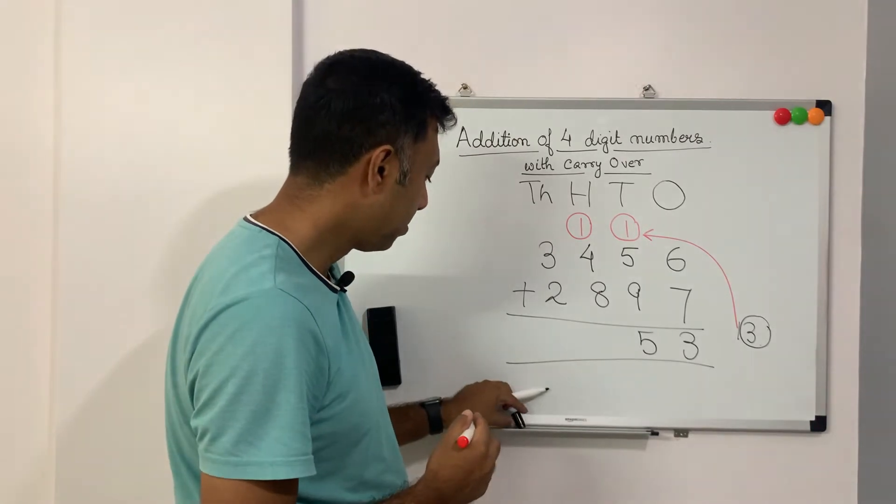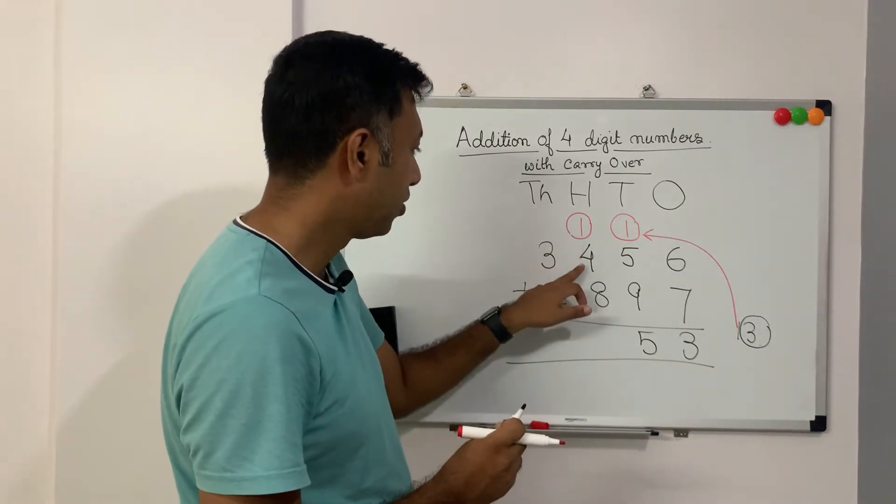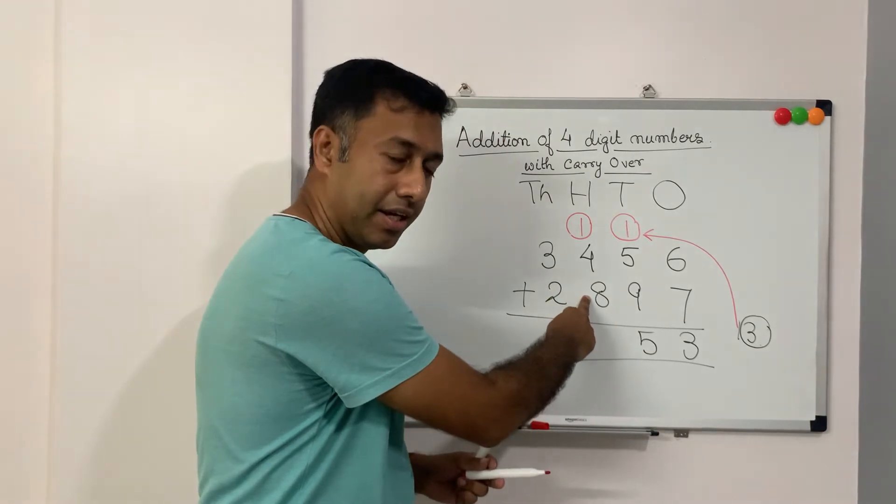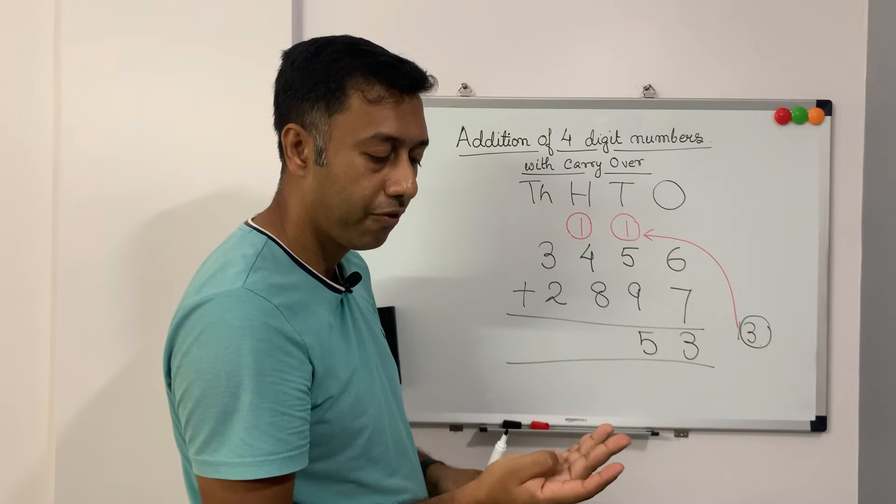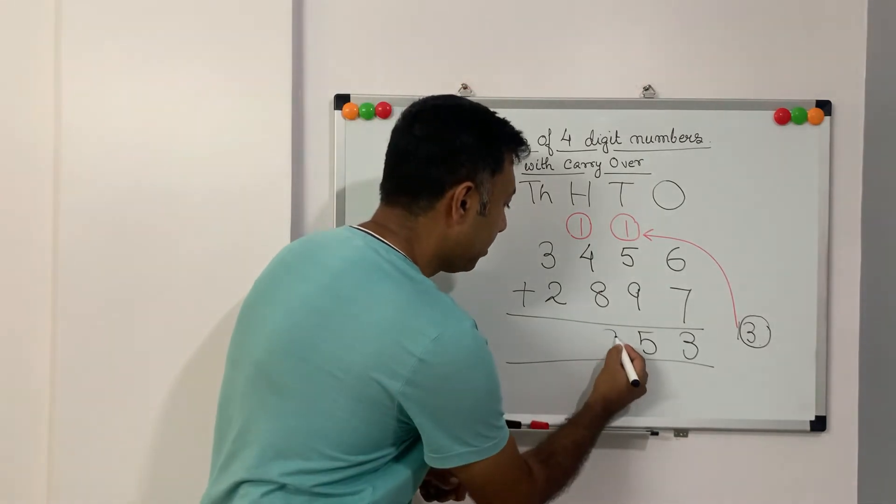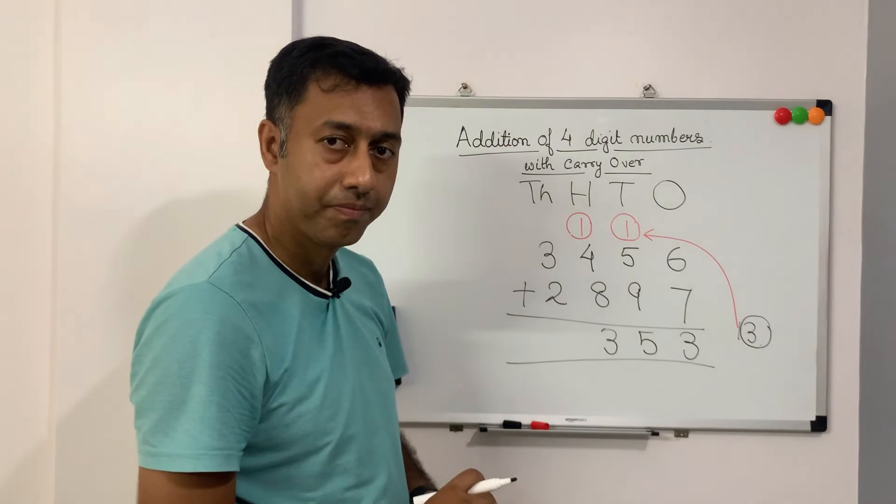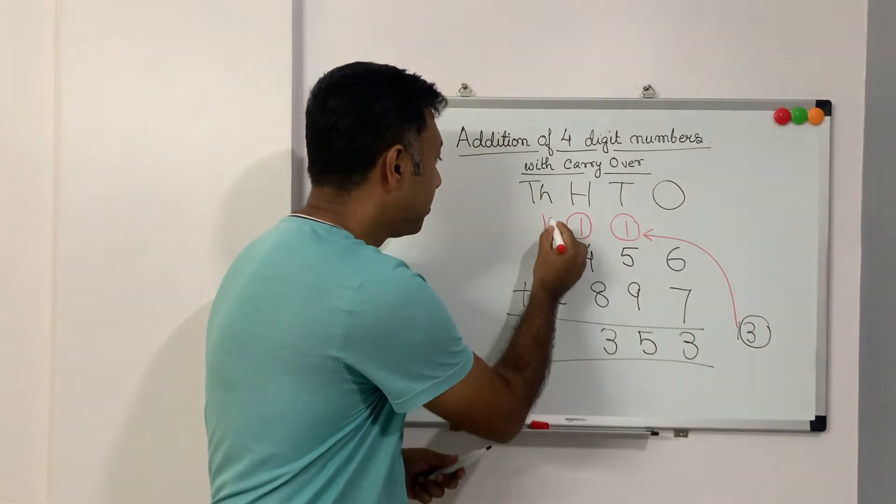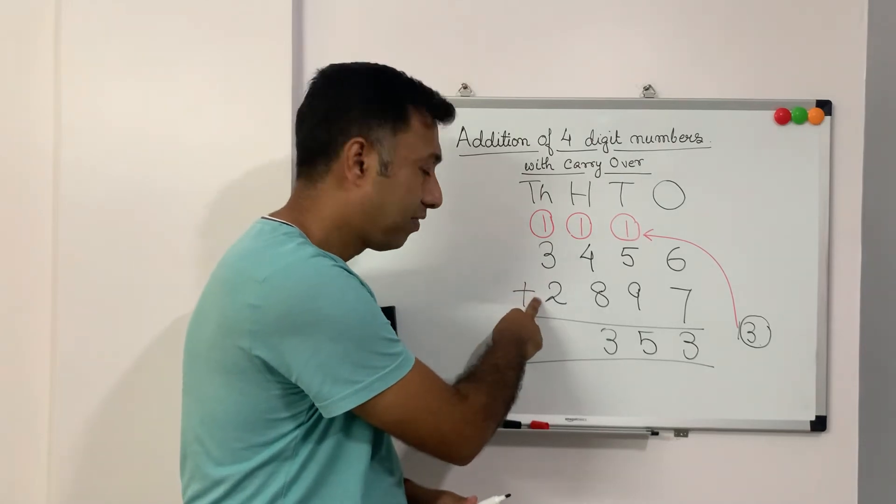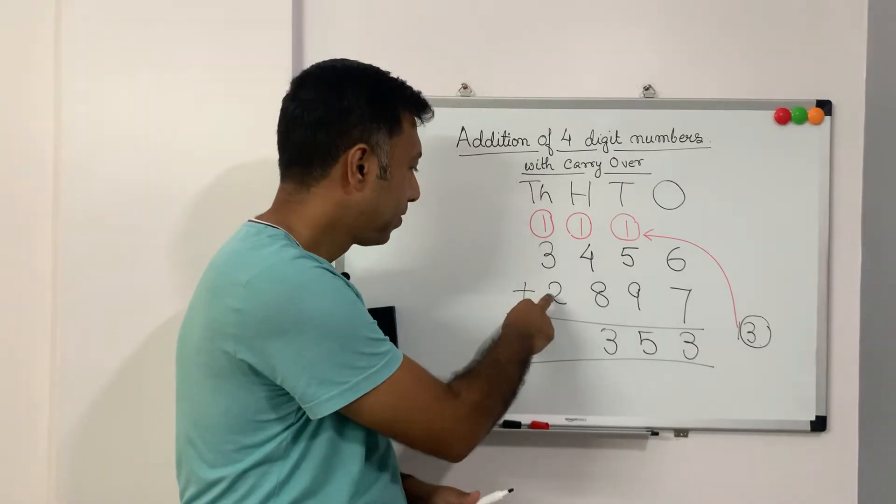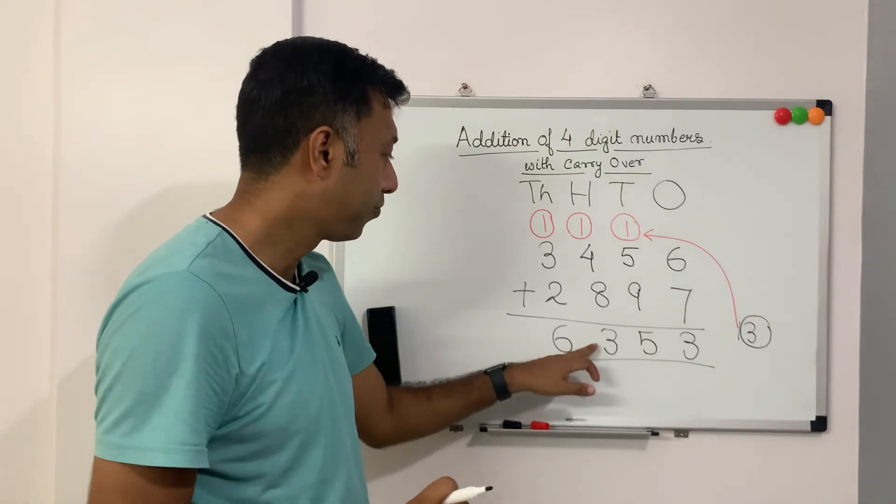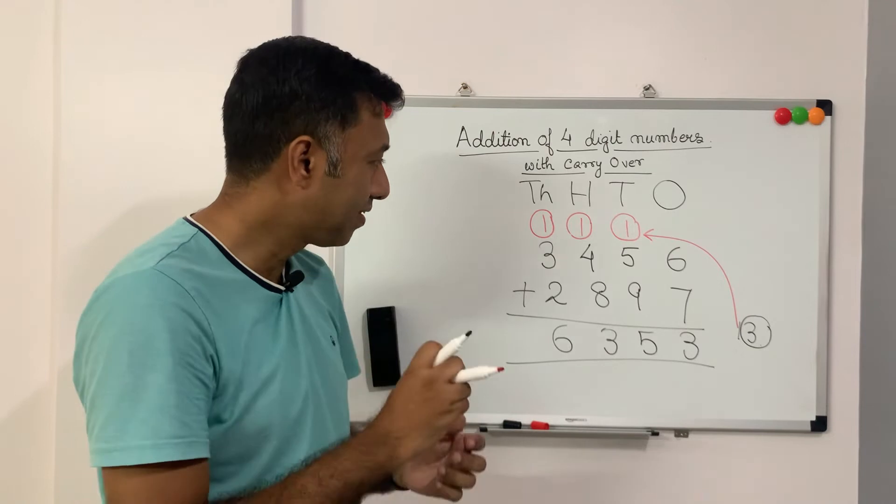Now we will add these numbers again. So 1 plus 4 is 5 plus 8. It is 13. Again 13. So we will write the 3 here. And what happens to the 1? You are right. The 1 comes here. So now we have to do 1 plus 3 plus 2. So 3 plus 1 is 4 plus 2 is equal to 6. So our total is 6353. Now let us take one more example.